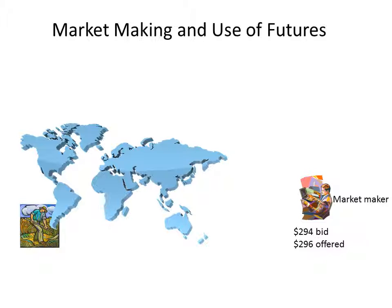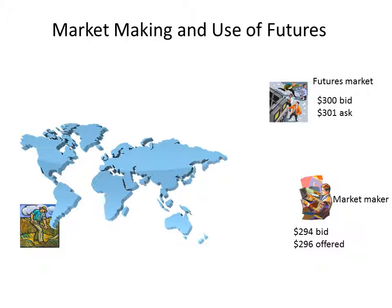Let's imagine that the farmers cooperative decides to sell to the market maker. Notice that the market maker has an eye on the futures market at the same time as he is quoting a price to the farmer. The market maker knows that in the futures market, the future is trading at 300 bid and 301 offered. If he is hit on his physical side he will lay the risk off in the futures market. So the farmer sells, and the market maker buys the physical commodity at 294. Being long of the physical, the market maker is worried about prices falling, so he sells futures contracts, hitting the bid in the futures market at 300.